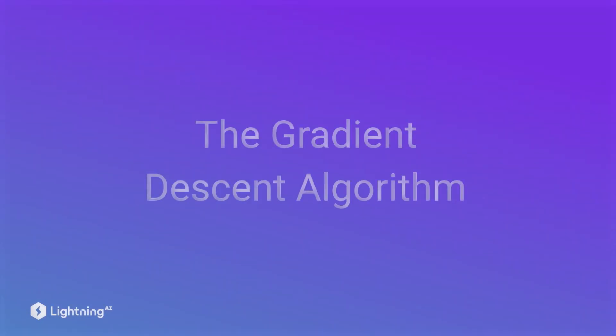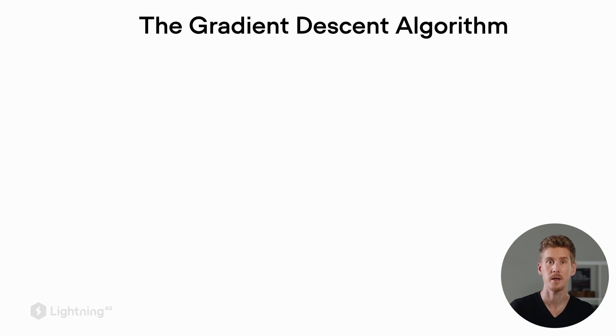And we can then use this concept for the so-called gradient descent algorithm to minimize the loss. So let's take a look at how this works. So gradient descent is an iterative process.